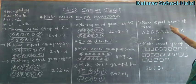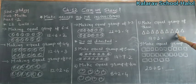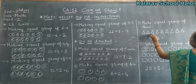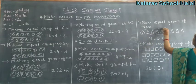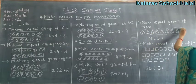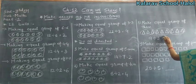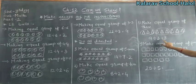Make equal group of 3. Here: 1, 2, 3, 4, 5, 6, 7, 8, 9 — total 9 triangles. Now we make a group of 3: 1 group, then 2, then 3. 3 times 3 is 9.